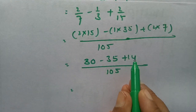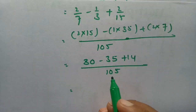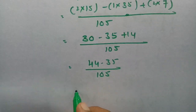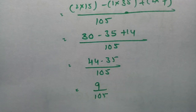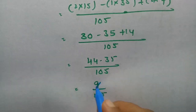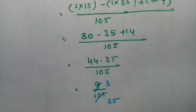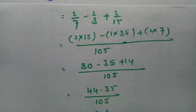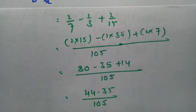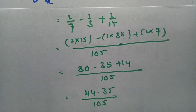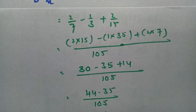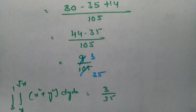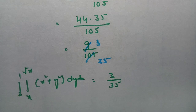This gives 44 minus 35 by 105, which is 9 by 105. Canceling by 3, this becomes 3 by 35. So the answer for the double integral from 0 to 1, x to root x, of x square plus y square dy dx is simply 3 by 35. That is the final answer.